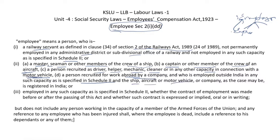To summarize the employee definition under Section 2(1)(dd): the three main categories are — railway employees; persons working in sea transport, air transport, road transport, or companies registered in India; and employees listed in Schedule 2, whether under a contract of employment or in permanent employment. These are the three major clauses defining who is an employee under this act.